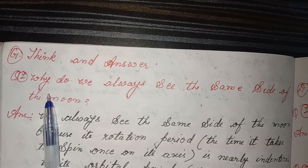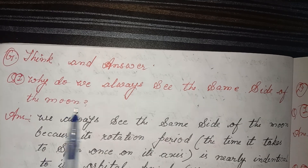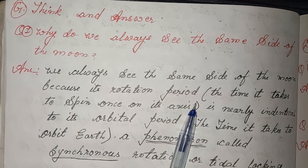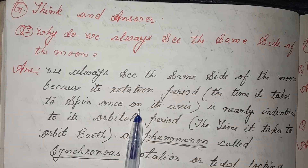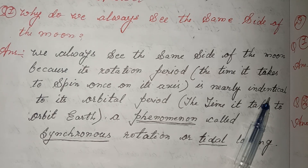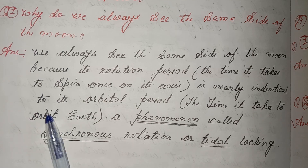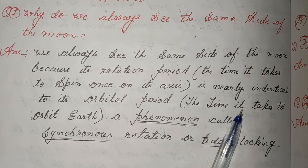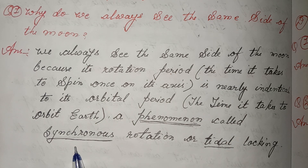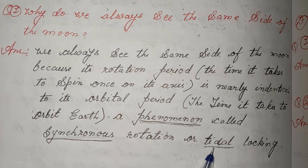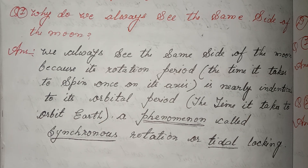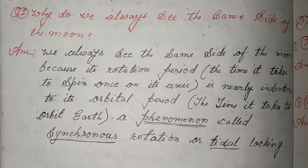Think and answer. First, why do we always see the same side of the moon? Answer: we always see the same side of the moon because its rotation period — the time it takes to spin once on its axis — is nearly identical to its orbital period — the time it takes to orbit Earth. This phenomenon is called synchronous rotation or tidal locking. I have done all the questions in this lesson. If you like my videos, please like, share and subscribe.